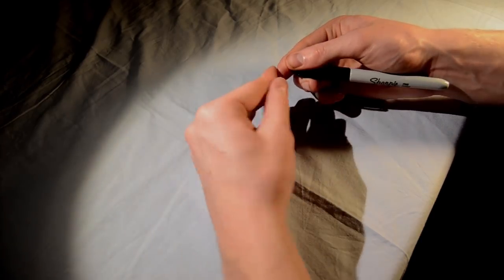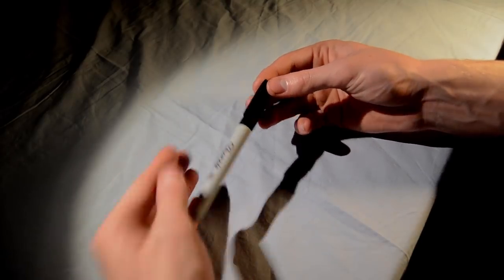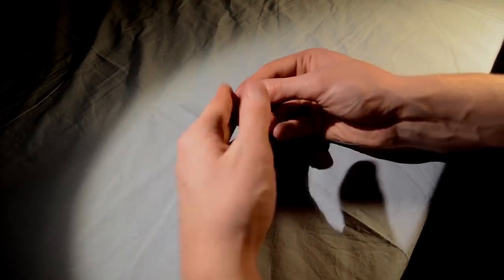To perform the final vanish, actually drop the first pen in your pocket. Now simply perform the flip stick under the cover of your other hand and the pen will appear to vanish.